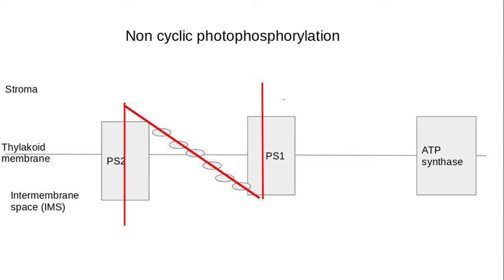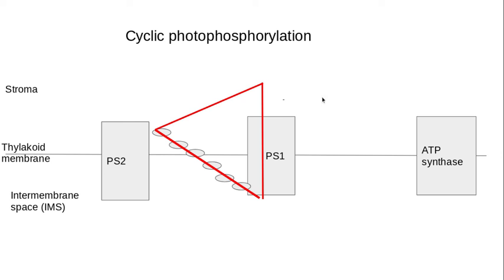But in cyclic photophosphorylation, photosystem 2 is not used at all. The electron passes down a series of electron carriers, and through a process of redox reactions, energy is released which actively transports the hydrogen ions into the intermembrane space.